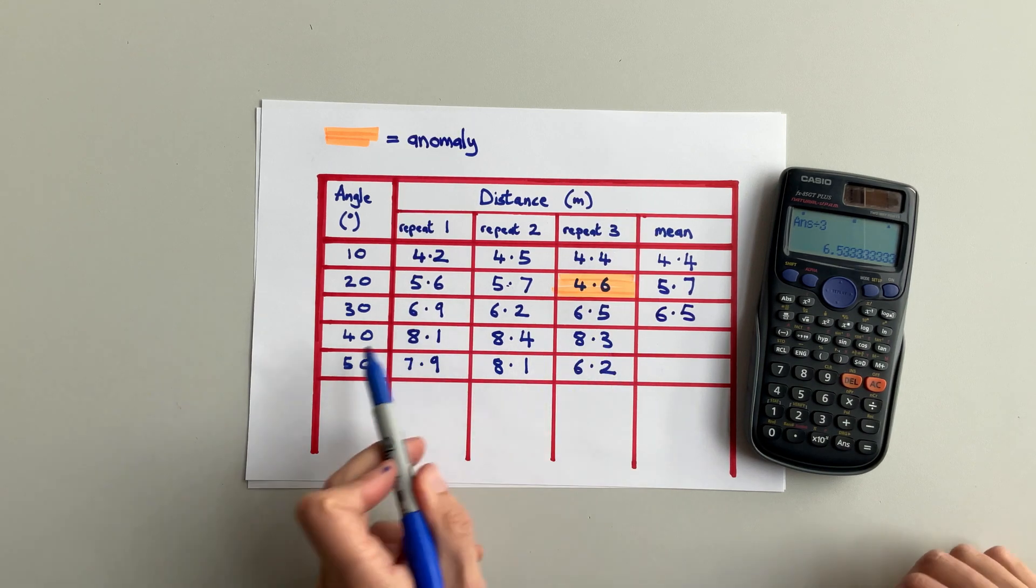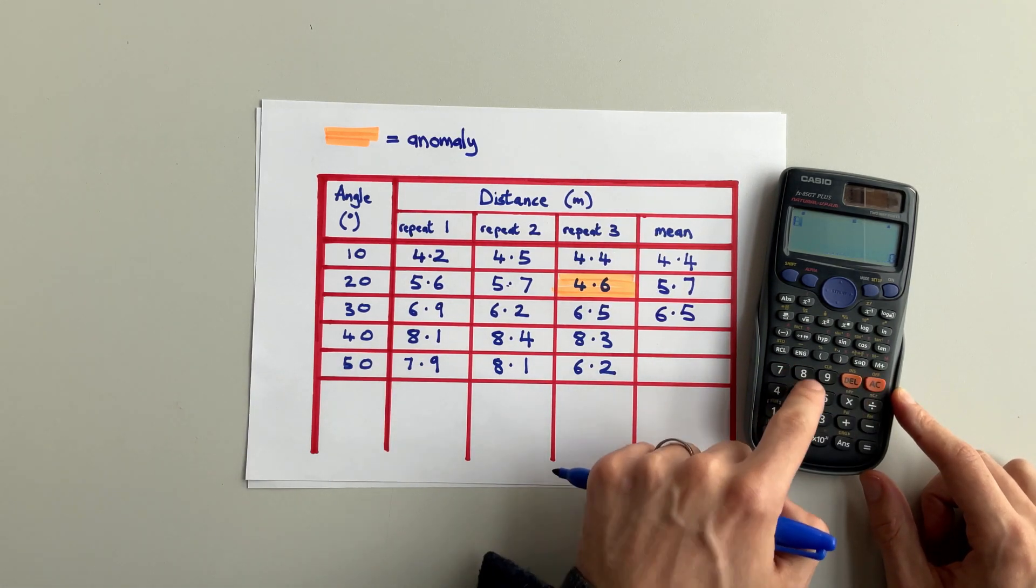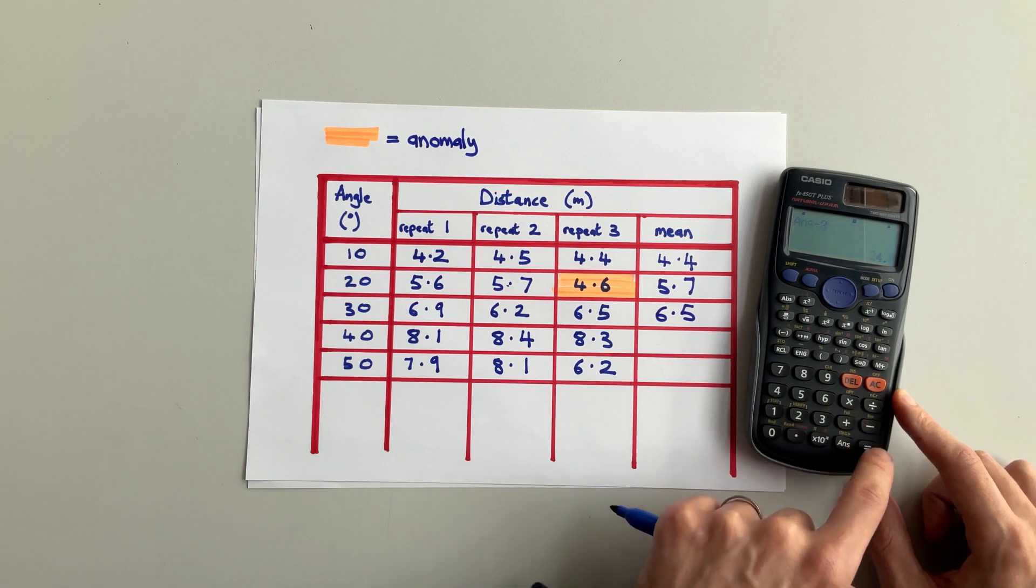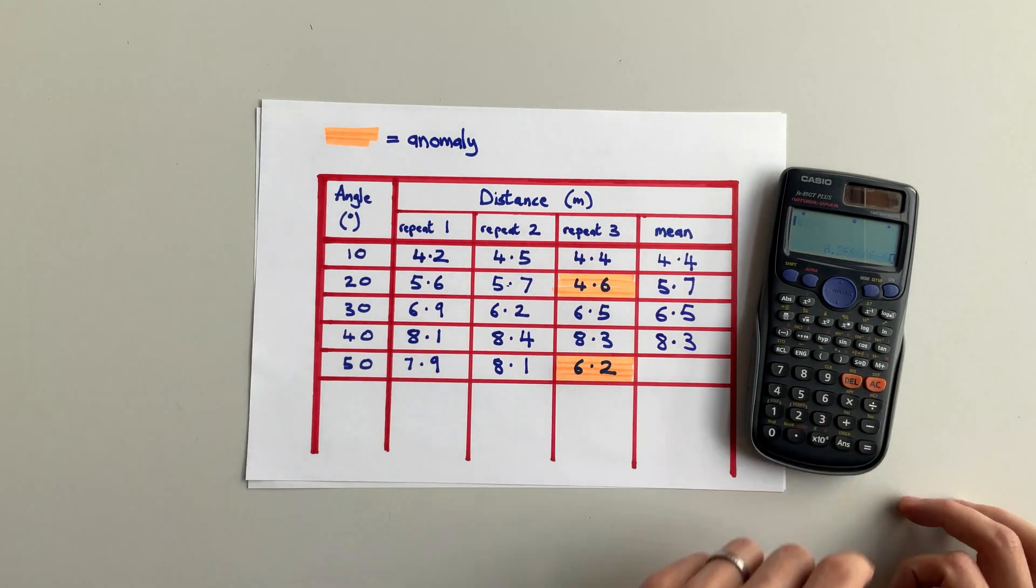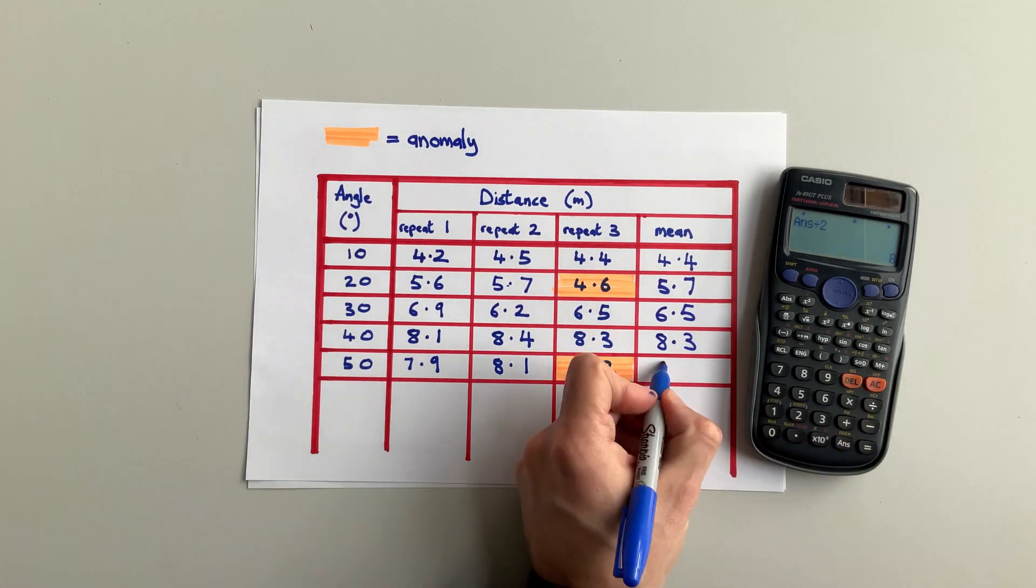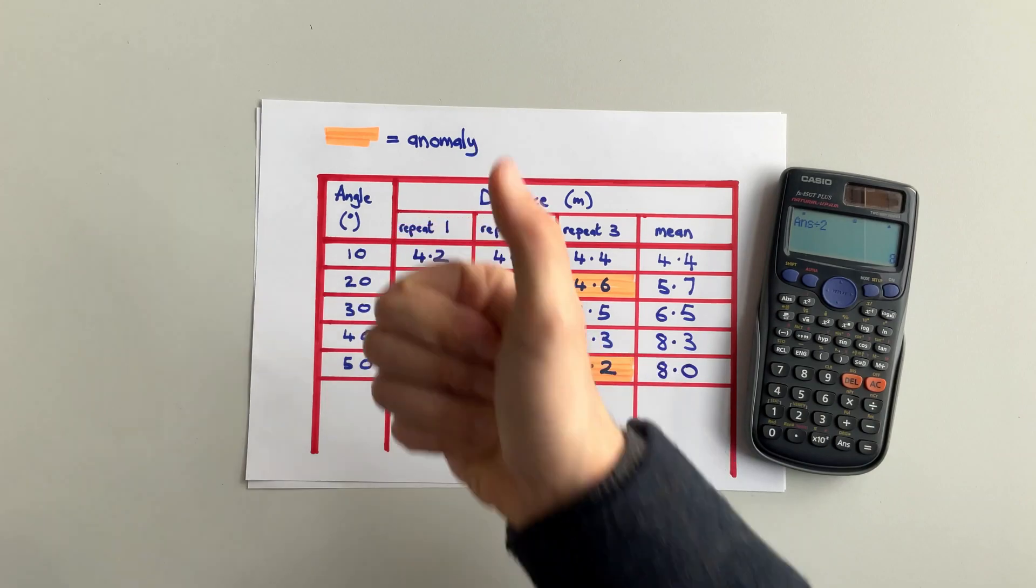Did you pause the video? Did you get it right? Did you spot the anomaly? Who knows? But I hope you'll remember how to calculate the mean. You do it by adding your numbers together, pushing equals, and then dividing by how many numbers you had. And that's it, calculating the mean.